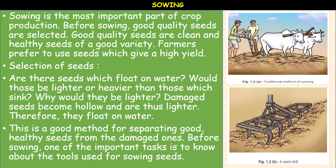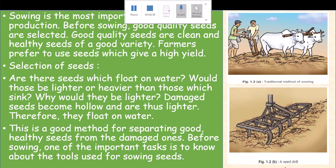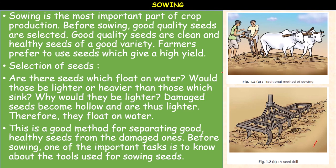Before sowing, it is important to know about the tools used for sowing seeds. The image shown here illustrates a traditional method of sowing seeds. In earlier times, seeds were sown using a funnel-shaped sowing device. Nowadays, a seed drill is used. Sowing of seeds is done for crops like wheat, maize, bajra, and mustard. However, in some crops like sugarcane and potato, vegetative parts such as stem pieces are used.